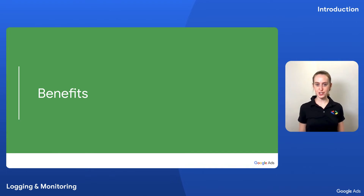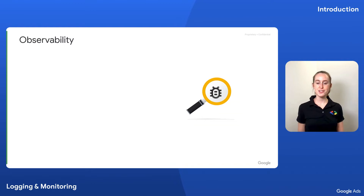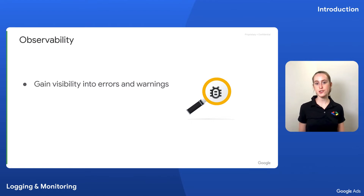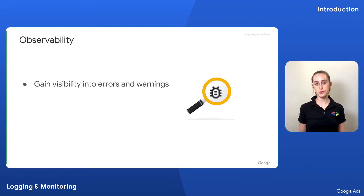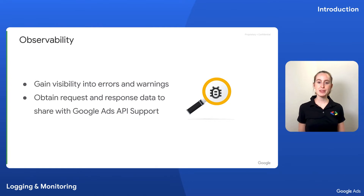Now that we understand the relationship between logging and monitoring, let's get into more detail about why we should implement logging and monitoring. What are the benefits? First, logging and monitoring provide greater visibility into errors and warnings so that you can trace, identify, and address issues quickly. Monitoring can help identify negative trends in application performance, and logs can help pinpoint the root cause. When working with the Google Ads API, enabling logging is required to get help from the support team to provide them with context about the issue you're experiencing.